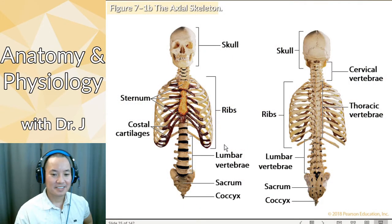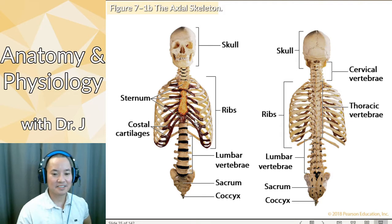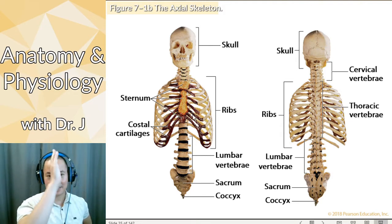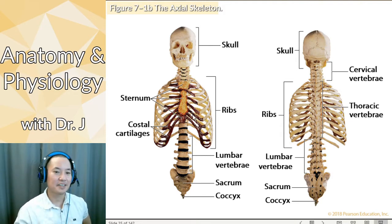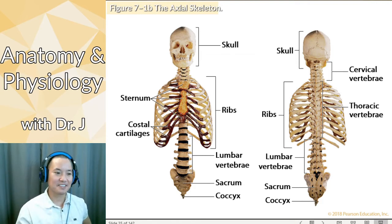Let's go on to the skeleton. So let's go to the axial skeleton. When you have an axis, you think of something central — like the earth spins on an axis. So the axial skeleton is the very central part of the skeleton.